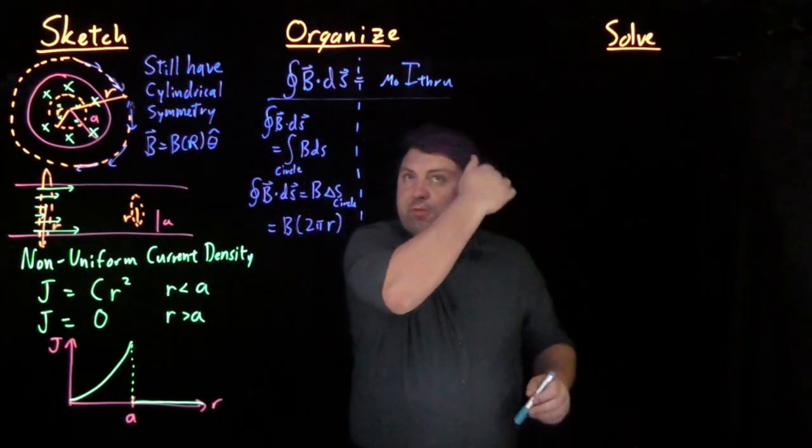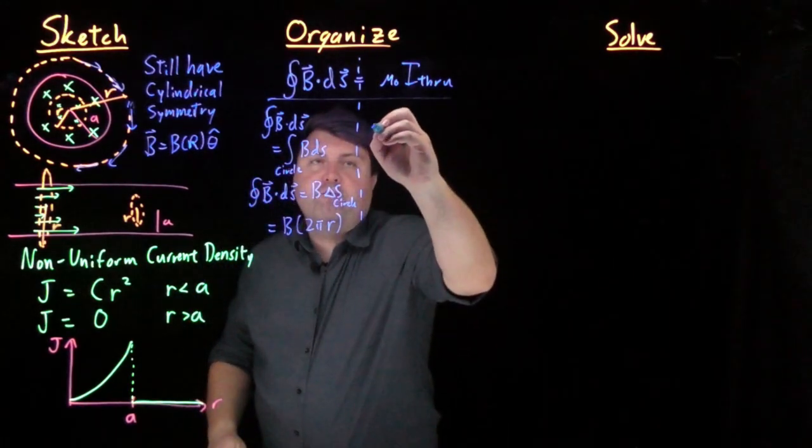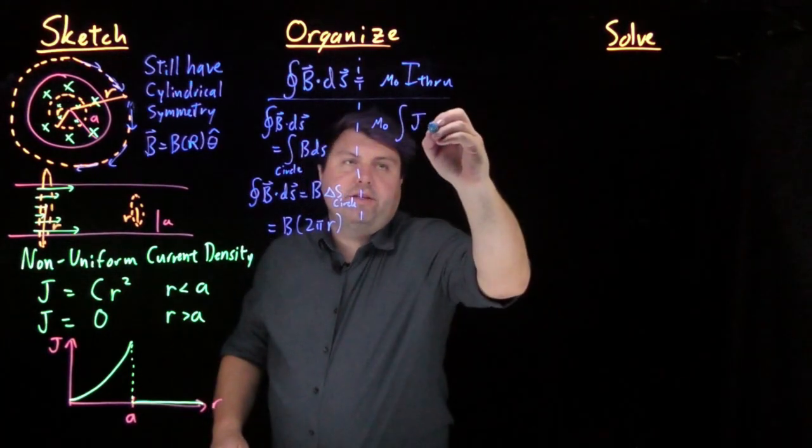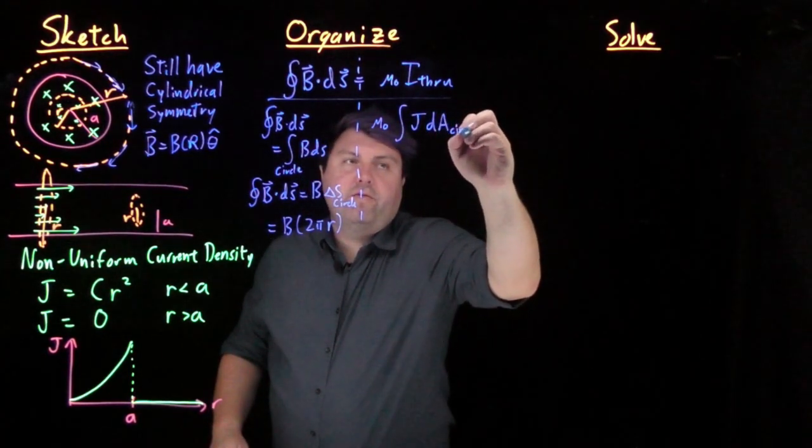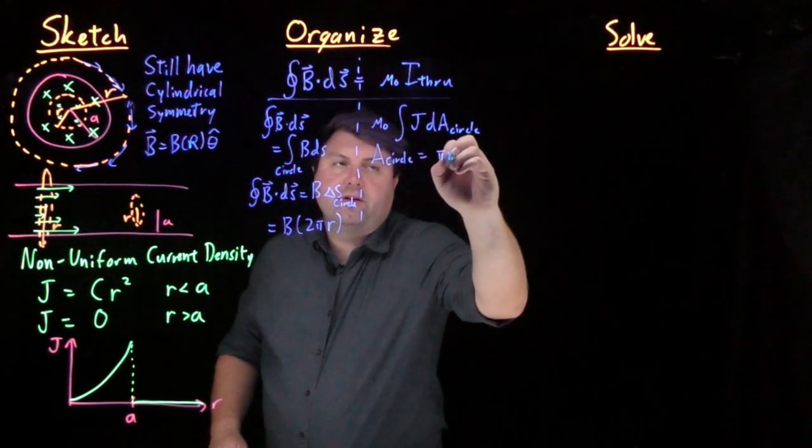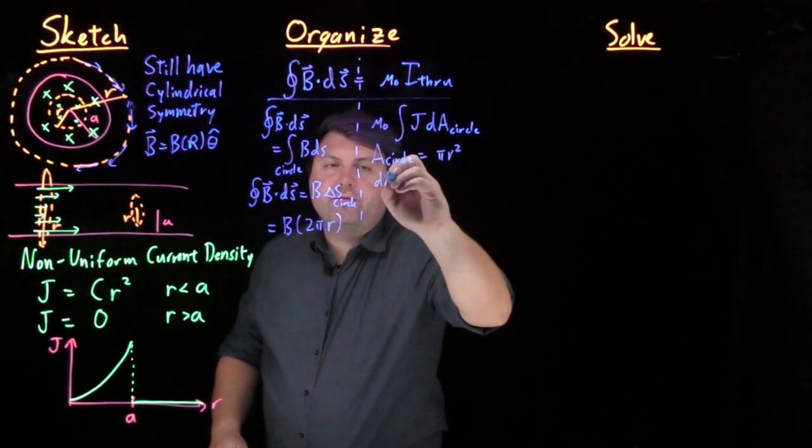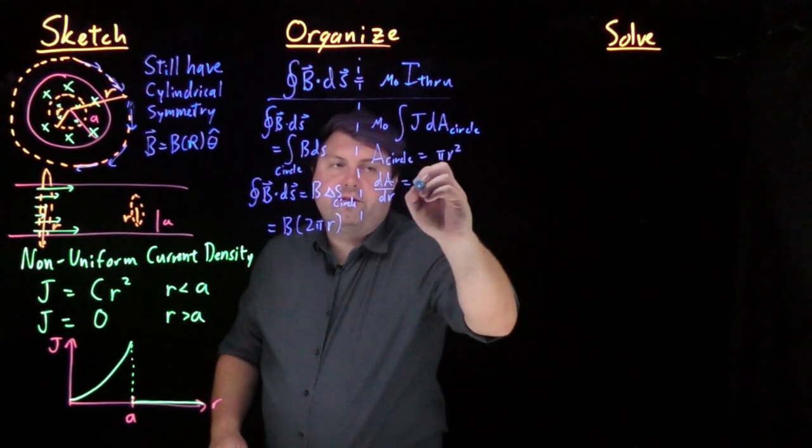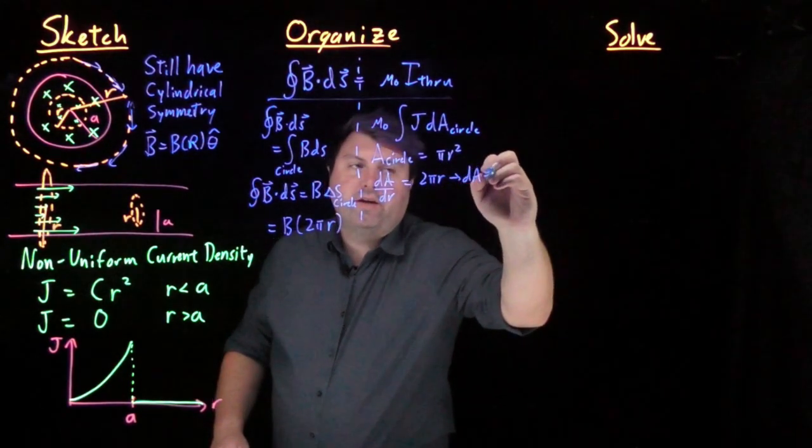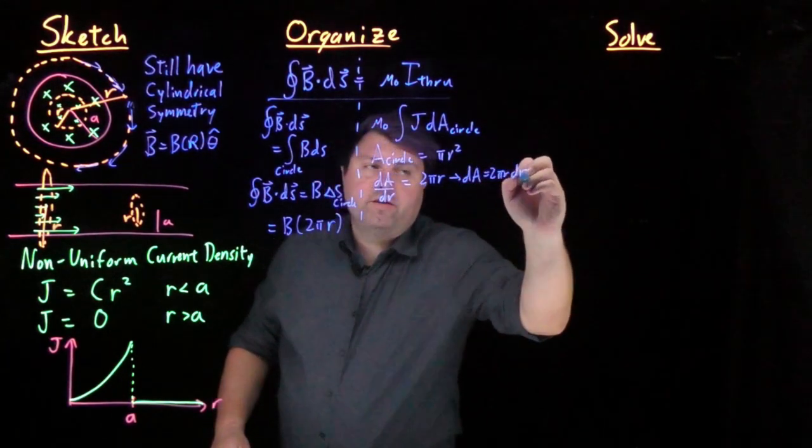Over on the mu naught through, we're going to have mu naught times our integral of the current density dA for a circle. So if we remember, the area of the circle is pi r squared, so dA dr is 2 pi r, so then dA is 2 pi r dr.